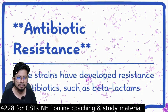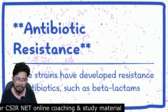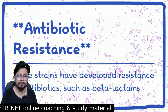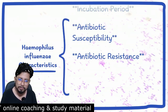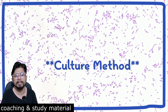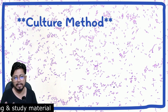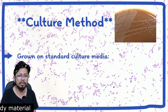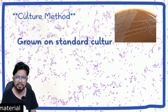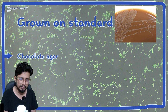Regarding antibiotic resistance, some strains of Haemophilus influenza have developed resistance to antibiotics such as beta-lactams, so those should not be used. As for culture media and culture methods, no special requirements are needed.